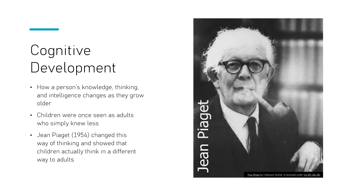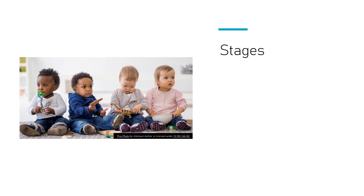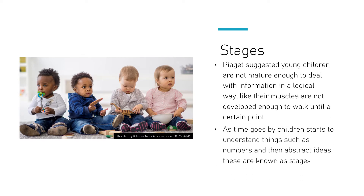The way children process the world, the way they saw and understood things, was different to that of adults. Piaget suggested there were stages of development, and that young children are just not mature enough to deal with information they take in in a logical manner. For example, can they see things from other people's points of view? What do they do when amounts of information change?